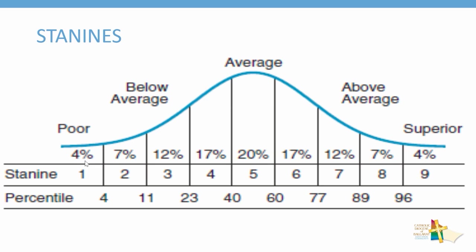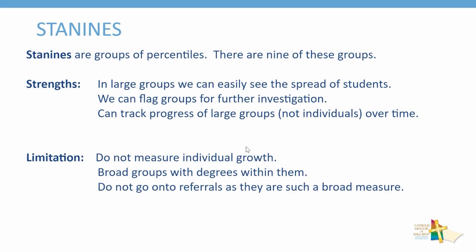There are only 4% of people in stanine 1, but 20% of the population in stanine 5. As you can see, the stanines are distributed across the bell curve. Stanines are useful for grouping students and for tracking the progress of cohorts and large numbers of students. In large groups we can easily see the spread of students, flag groups for further investigation, and track progress over time. But I must stress — we don't use stanines to track the progress of individuals. Stanines are broad and there are degrees within them. Stanines do not go onto referrals as they are such a broad measure.